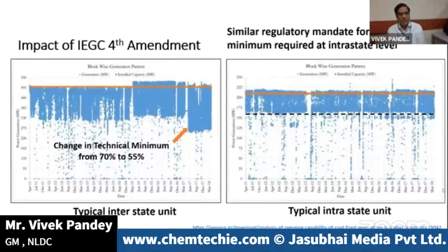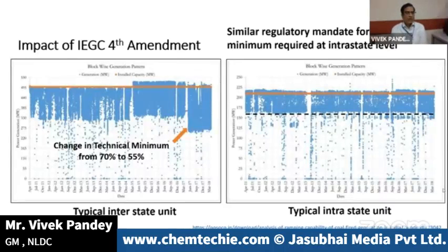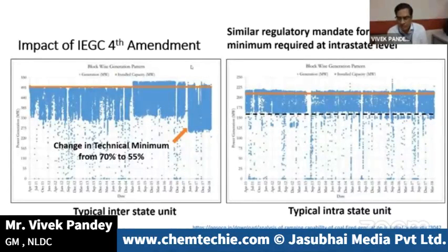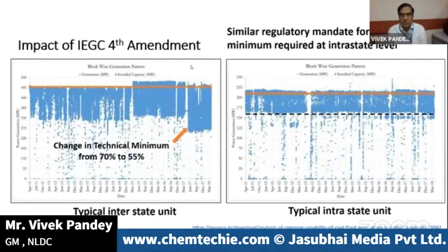The figures showed that the more we can reduce the technical minimum of the thermal fleet, the lesser would be the renewable energy curtailments. These trends were anticipated, and a welcome amendment was done in IEGC in 2017 which mandated lowering the technical minimum of interstate thermal generating stations from 70 percent to 55 percent. The left graph shows that at the interstate level we have started pushing operating levels down to as low as 55 percent.